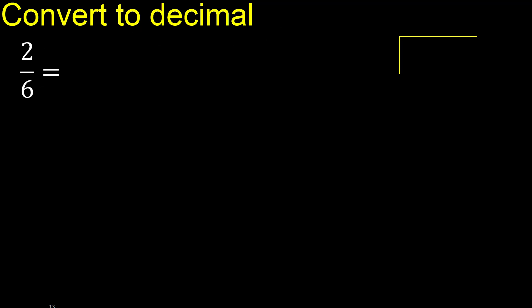2 divided by 6. Since 2 is less than 6, complete with 0, always complete with 0.